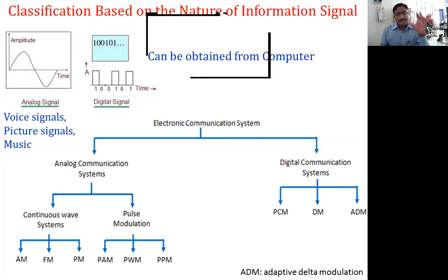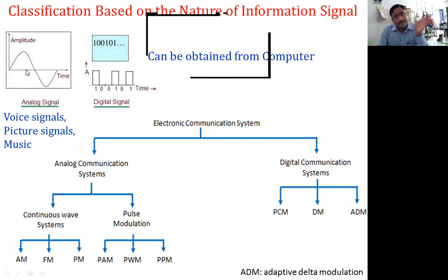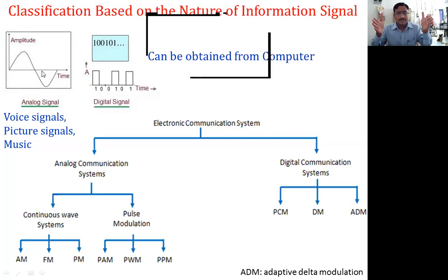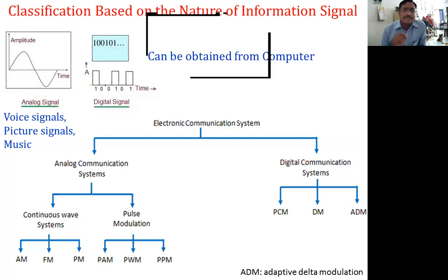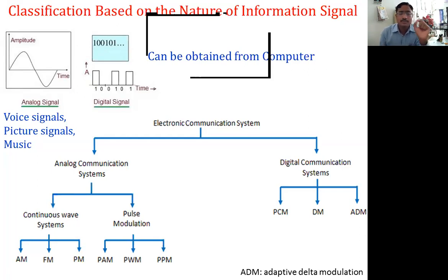The amplitude of the pulse is the height of the pulse. When the amplitude varies, we have pulse amplitude modulation. When the width of the pulse varies — that is, this distance, the width — if it becomes smaller or larger, that is pulse width modulation, PWM. If the position of a pulse changes, that is called pulse position modulation, PPM.